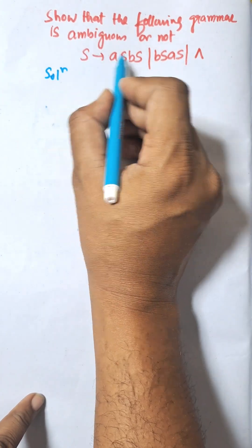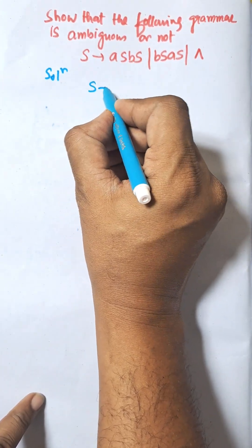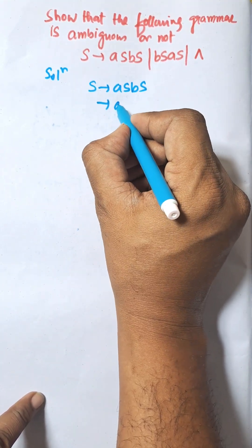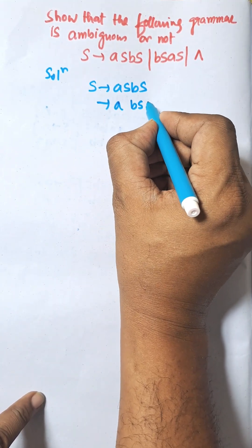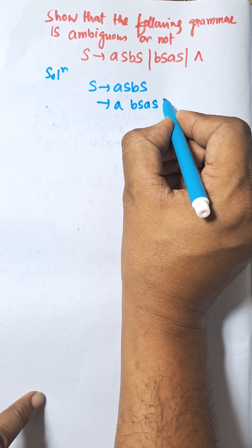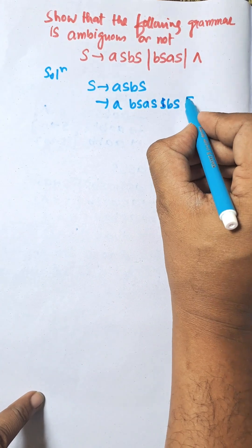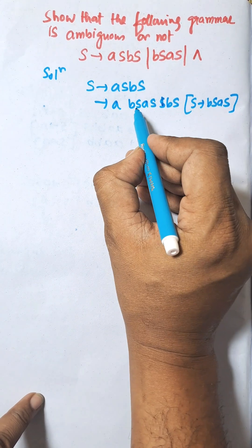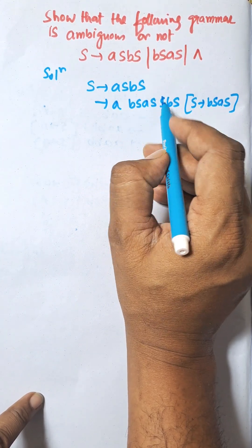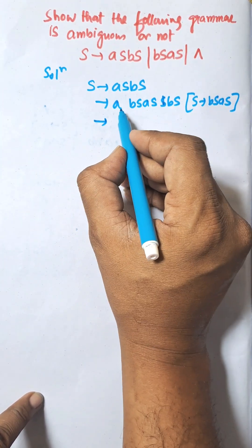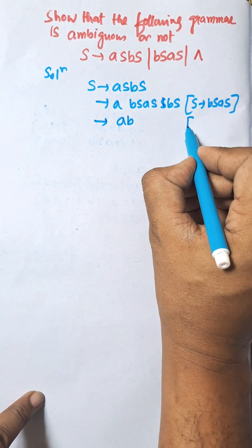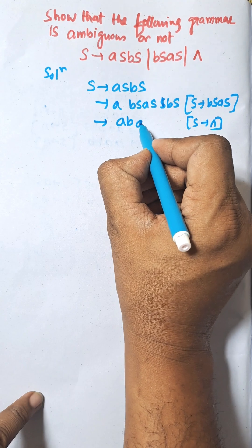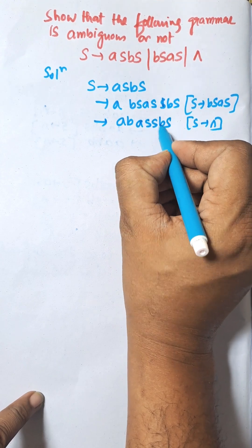The production rules are given. Consider the first production: S → aSbS. Now putting the values of S here: aSbS → abSaS. Putting the values of aS here gives bS. Now bS is empty — putting S as empty — that means abaSbS.